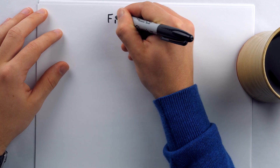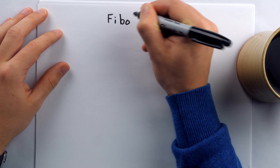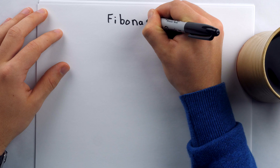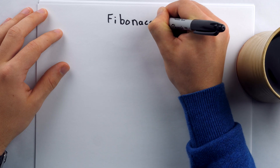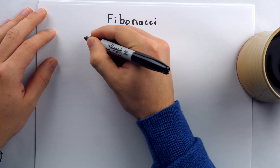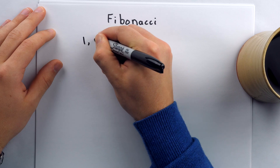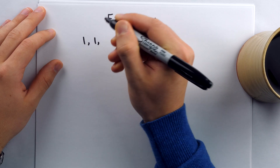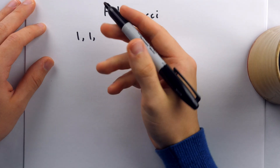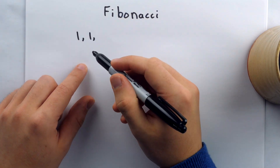Perhaps the most famous sequence in all of mathematics is the beautiful Fibonacci sequence. This sequence begins with two terms, one and one, and then each subsequent term is the sum of the previous two.